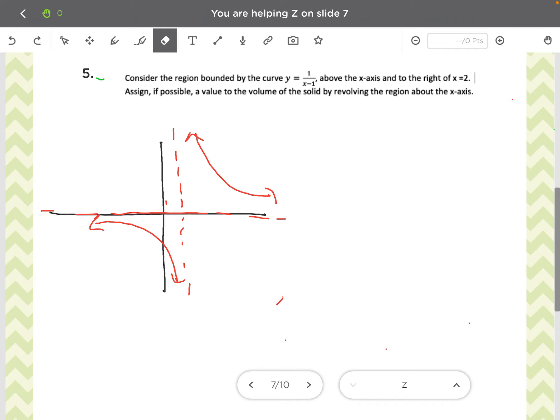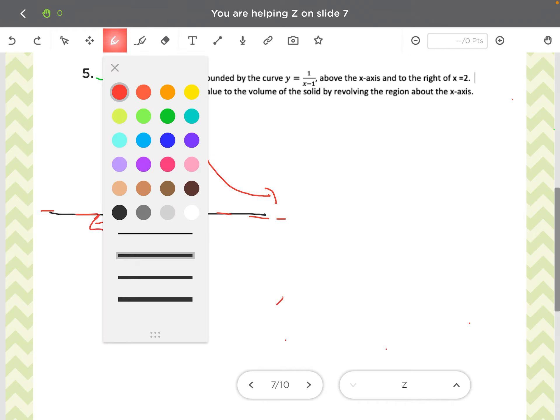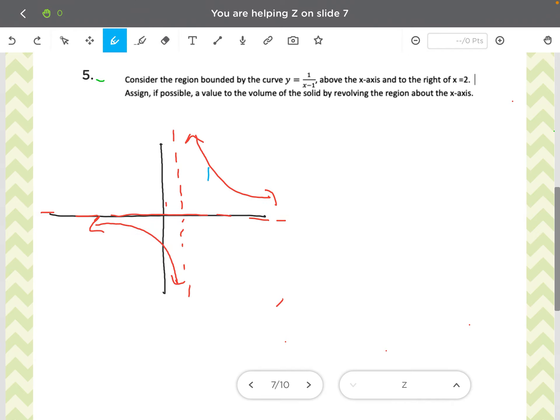So x equals 2 is going to be about here, not drawn to scale, and we only care about the graph to the right of it. So notice this goes infinitely to the right. And what we're trying to figure out is if we can find a volume for that region if we revolve it about the x-axis.